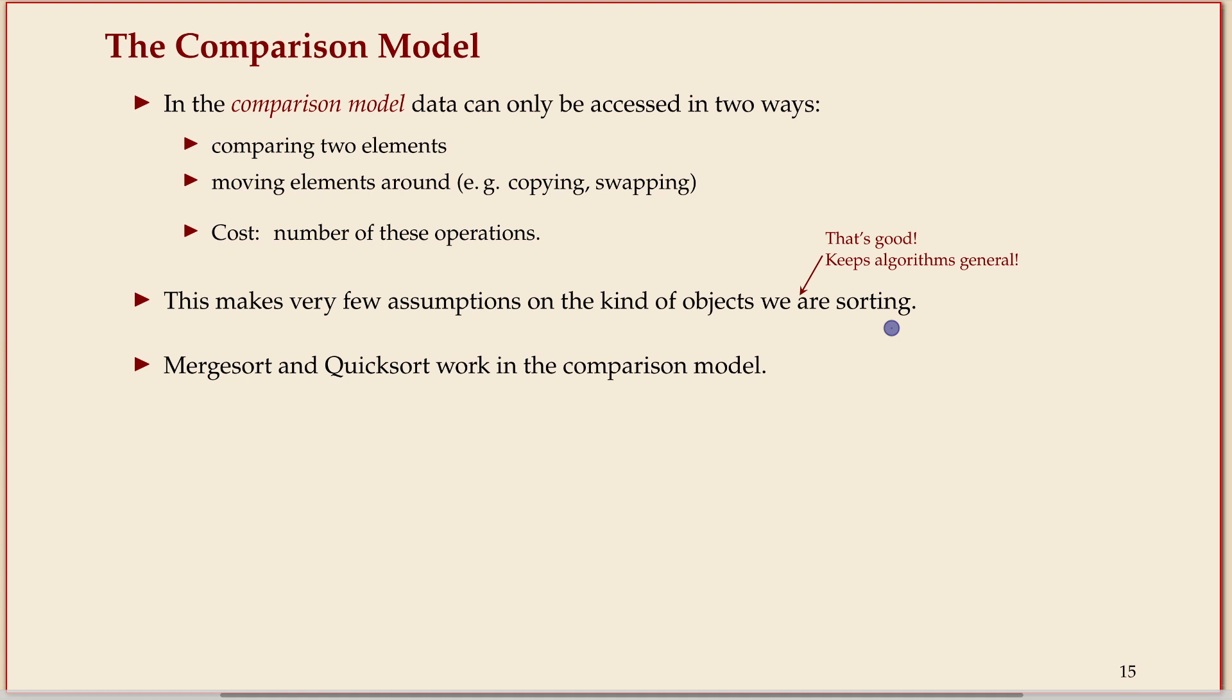So usually for algorithms, a more detailed model is better because then you can model reality closer. But for lower bounds the opposite is true. The important bit here is that both merge sort and quicksort are inside this model. You can formulate them so that they only work by comparing elements and moving them around. We've basically done that in my high-level explanation anyways, so they're captured by what we'll say.